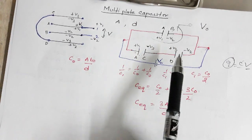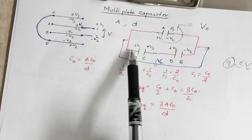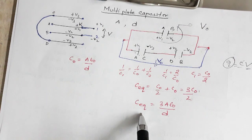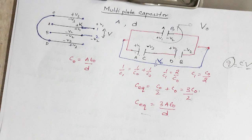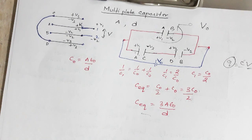Now that we know the potential across each capacitor and the capacitance of each, we can calculate the charge on each capacitor. This is how you handle problems involving multi-plate capacitors. I hope this concept is clear — thank you.